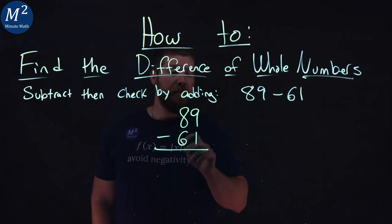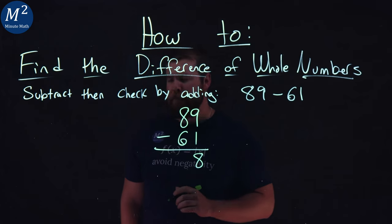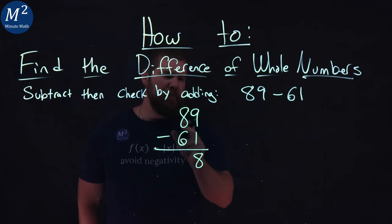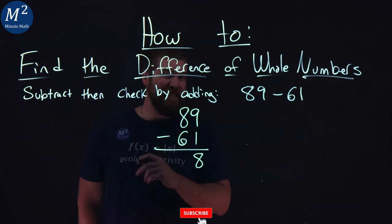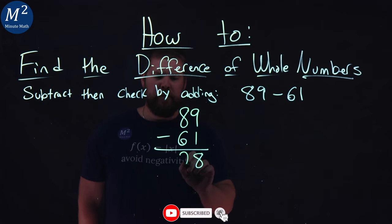We start with the right hand side, 9 minus 1, good old 8. We can do that. Go to the tens digit, and we have 8 minus 6, and that's 2. So 89 minus 61 is 28.